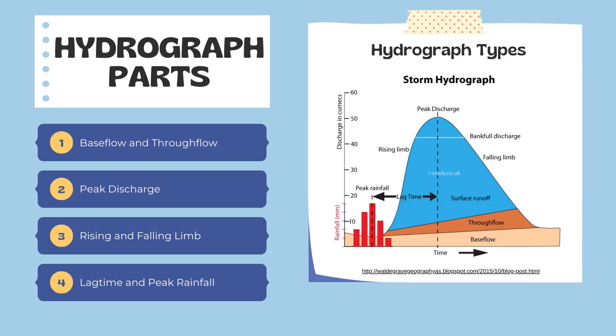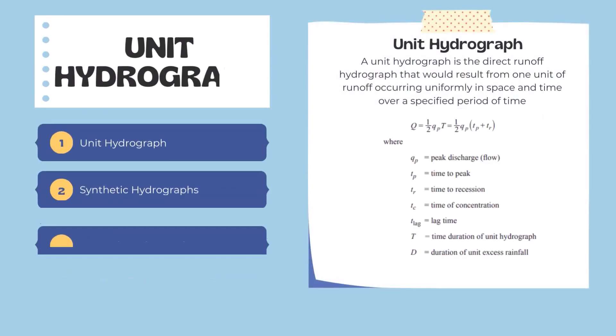So what is a unit hydrograph? A unit hydrograph is the direct runoff hydrograph that would result from one unit of runoff occurring uniformly in space and time over a specified period. There are a couple different equations for a unit hydrograph. Q equals one half the peak flow times the time duration of the unit hydrograph, and there are quite a few different versions.